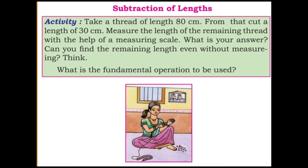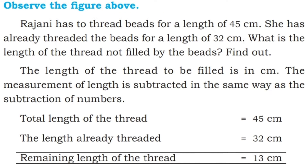Think: what is the fundamental operation to be used? Observe the figure. Rajini has to thread beads for a length of 45 centimeter. She has already threaded the beads for a length of 32 centimeter. What is the length of the thread not filled by the beads? The measurement of length is subtracted the same way as subtraction of numbers. Total length = 45 cm, threaded = 32 cm. Remaining: 5 minus 2 is 3, 4 minus 3 is 1. Remaining length = 13 centimeter.